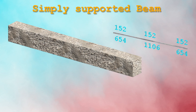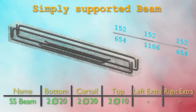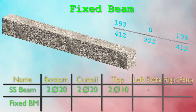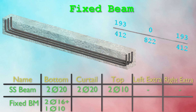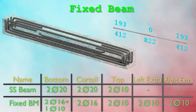The simply supported beam can be designed by providing 2 bars of 20mm throughout with an additional 2 bars of 20mm curtailed at the bottom, and 2 bars of 10mm as top steel. For the fixed beam, we provide 2 bars of 16mm and 1 bar of 10mm throughout with additional 2 bars of 16mm curtailed, while for the top steel we go with 2 bars of 10mm diameter throughout the length, with additional anchor bars of 10mm diameter for the negative moment at both top left and top right supports.